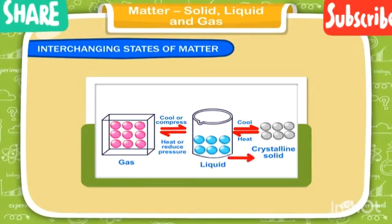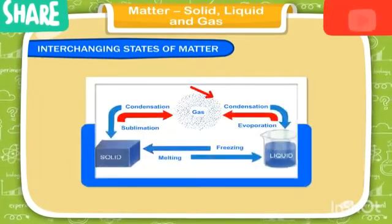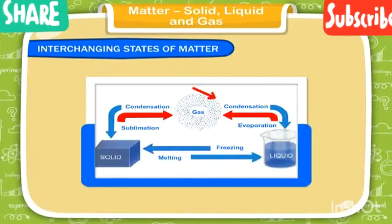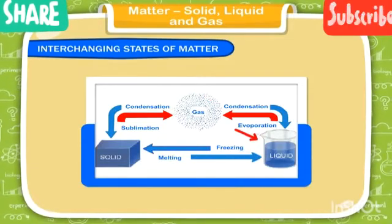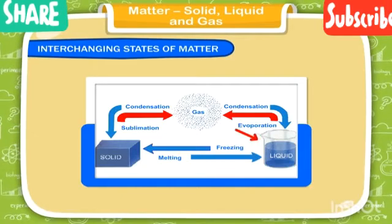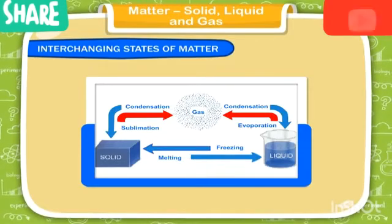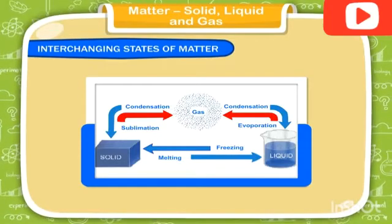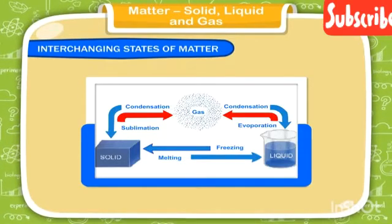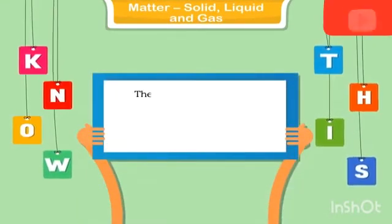Similarly, a gas can also be converted into a liquid, and a liquid can be converted into a solid. Water vapor (gas) can be condensed to form liquid water, and on further cooling it freezes to form solid ice. So matter can be changed from one state to another by heating or cooling.